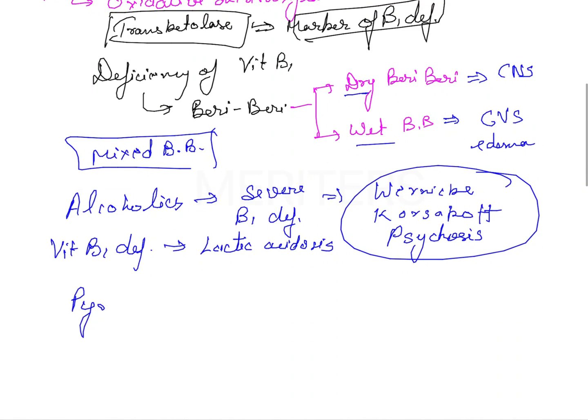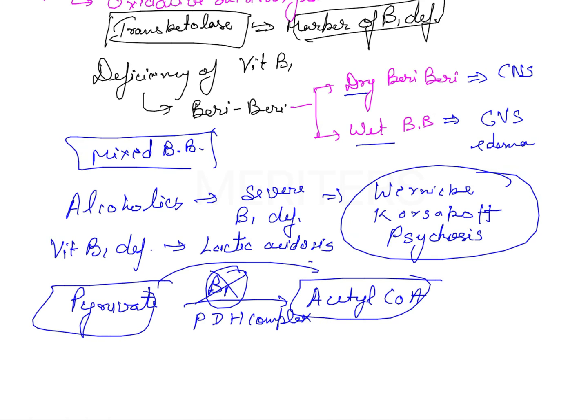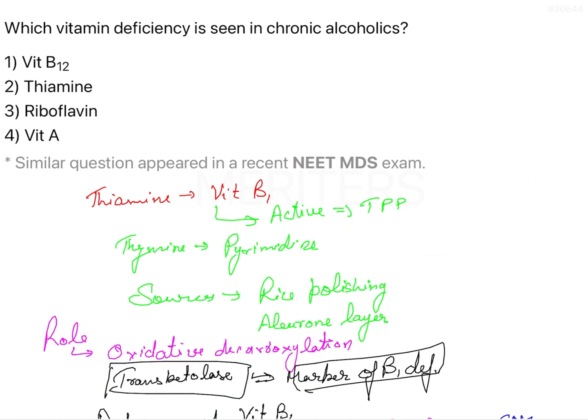What generally happens is pyruvate has to be converted to acetyl coenzyme A in the presence of vitamin B1 and PDH complex. Whenever there is deficiency of vitamin B1, the exchange is not possible. The pyruvate is not converted to acetyl coenzyme A, so there will be accumulation of pyruvate. This excess later converts to lactic acidosis under anaerobic respiration.